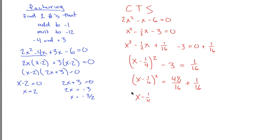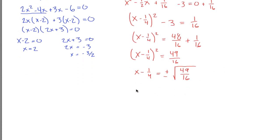So (x - 1/4)² = 49/16. Taking the square root of both sides, and making sure to put in the plus or minus, gives x - 1/4 = ±√(49/16) = ±7/4, because 7² = 49 and 4² = 16. Adding 1/4 to both sides gives x = 1/4 ± 7/4.